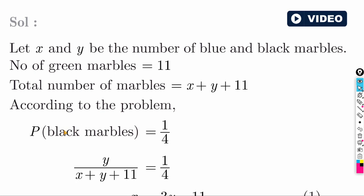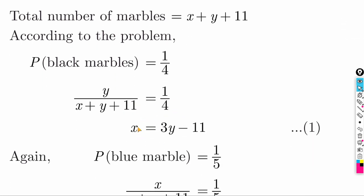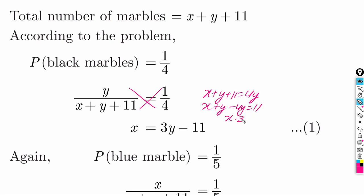For black marbles: y divided by (x + y + 11) = 1 by 4. Cross multiplying: x + y + 11 = 4y, so x + y - 4y = -11, giving x - 3y = -11, therefore x = 3y - 11.